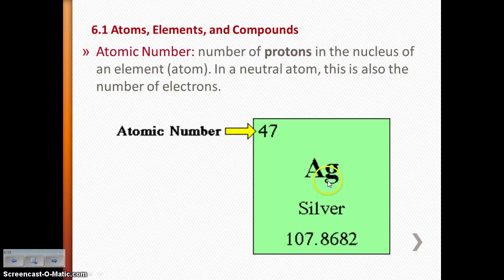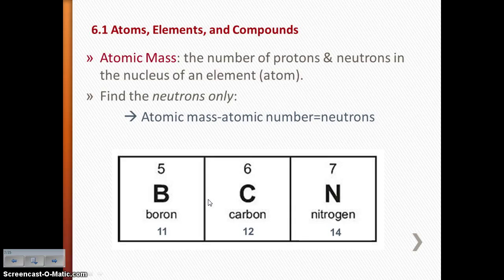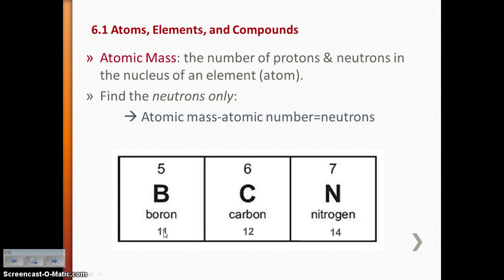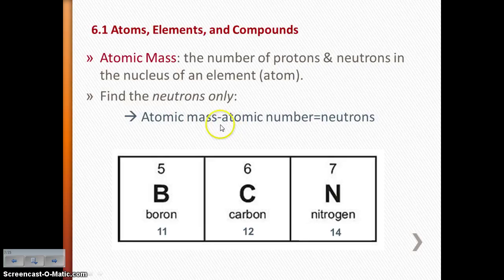Silver (Ag) has an atomic number of 47, so it has 47 protons. The atomic mass shown on the periodic table gives us the number of protons plus the number of neutrons — basically all the particles that make up the nucleus. For boron, the atomic mass is 11 and it has 5 protons, so we can calculate: atomic mass minus atomic number equals number of neutrons. 11 minus 5 equals 6 neutrons for boron.